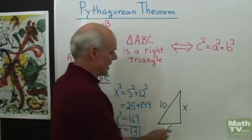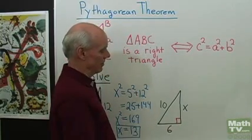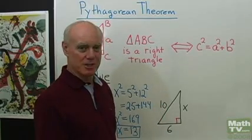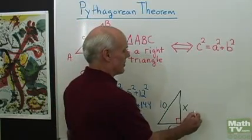Now how about this triangle right here? If this is a right triangle, then I have this side is X, this side is 6, and the longest side, the hypotenuse, is 10. I'm going to set it up the same way.